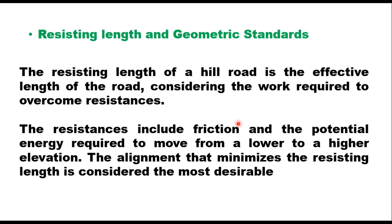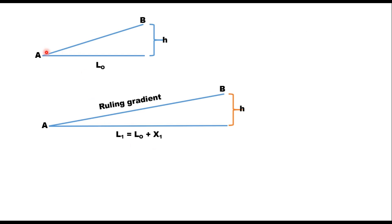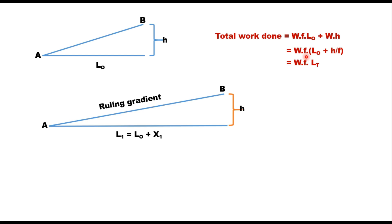Resisting length of a hill road is the effective length of the road considering the work required to overcome resistances, including friction and the potential energy required to move from a lower to a higher elevation. The alignment minimizing resisting length is most desirable. For two points A and B with direct length L0 and height difference H, the total work done for moving load W with friction F is: W × F × L0 + W × H. This gives resisting length = L0 + H/F, so total work = W × F × resisting length.